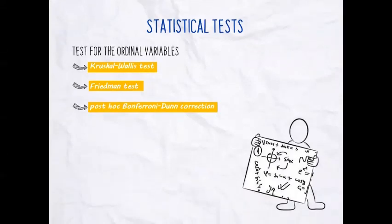On the other hand, for ordinal variables, they implemented non-parametric tests: the Kruskal-Wallis test, which is the equivalent of ANOVA, the Friedman test, and of course the post hoc analysis with the Bonferroni-Dunn correction — for the same reason as before, since Kruskal-Wallis is a global test and we need further analysis to discover where the difference lies.